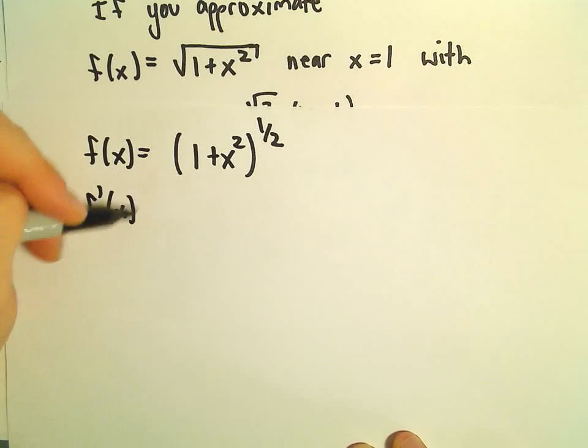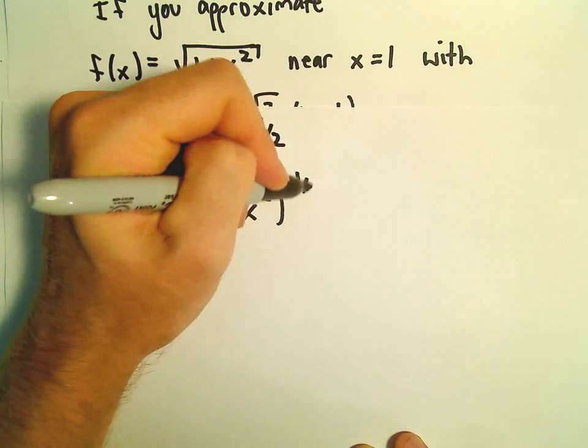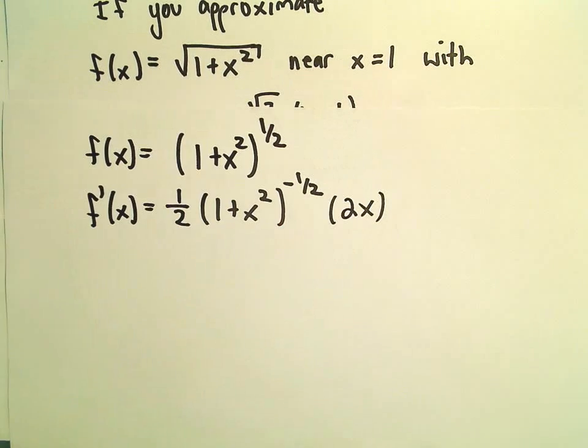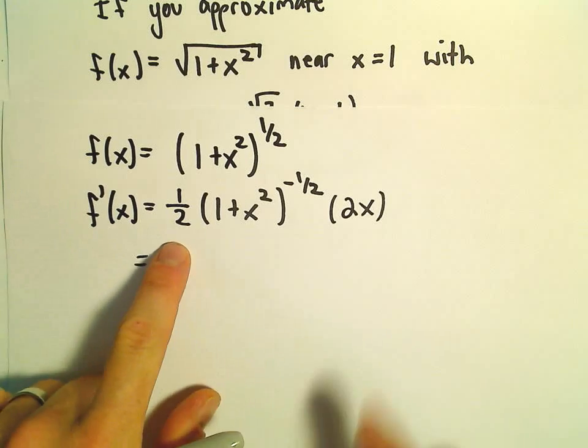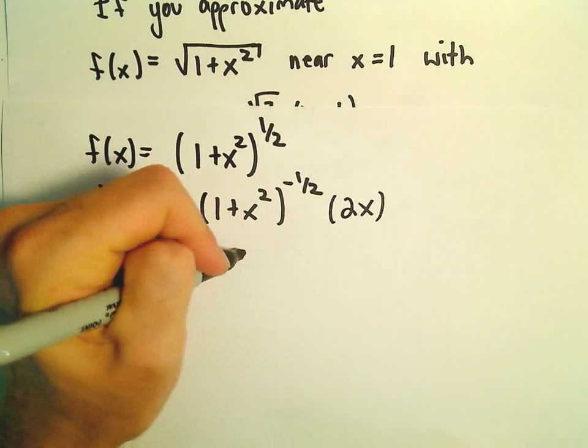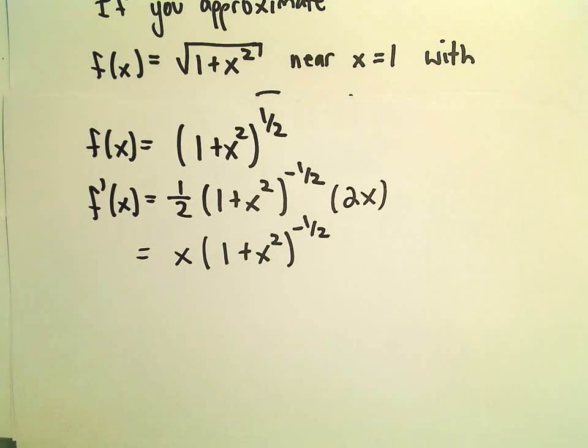So the first derivative, we'll get 1 half times 1 plus x squared to the negative 1 half power. And then we have to do the chain rule, so times 2x. So the 1 half and the 2 will cancel, and we'll be left with x times 1 plus x squared to the negative 1 half power.